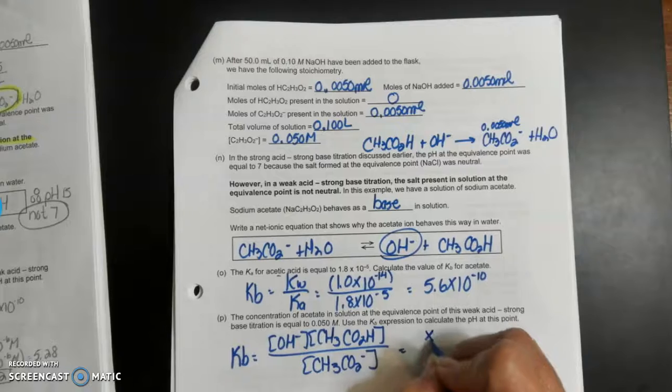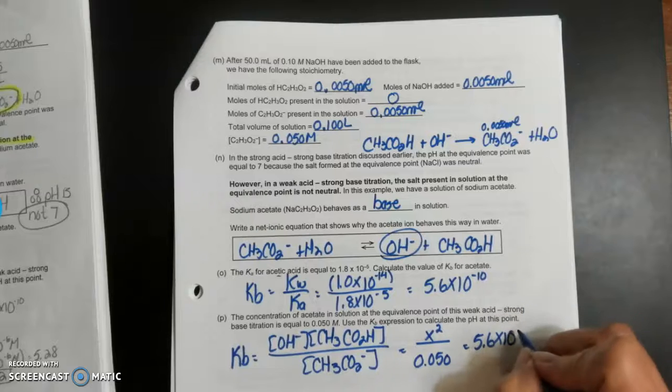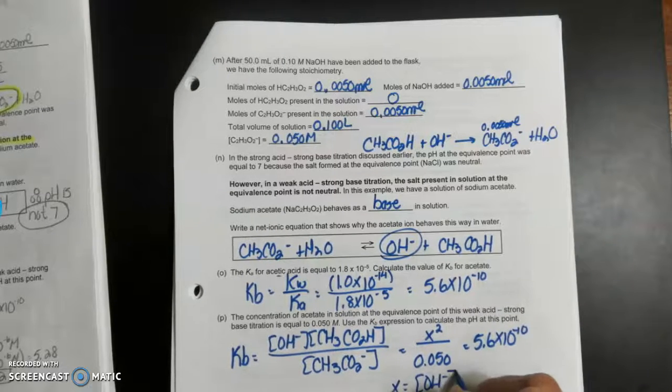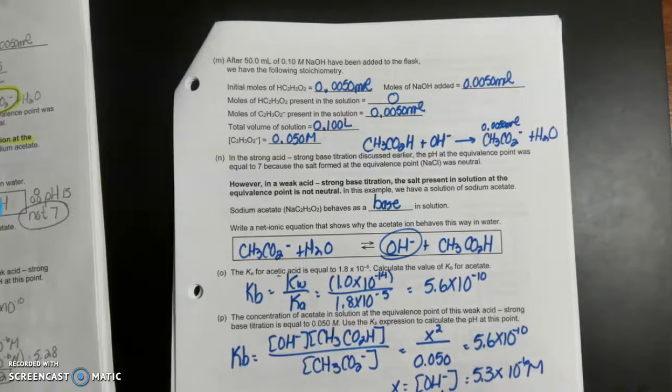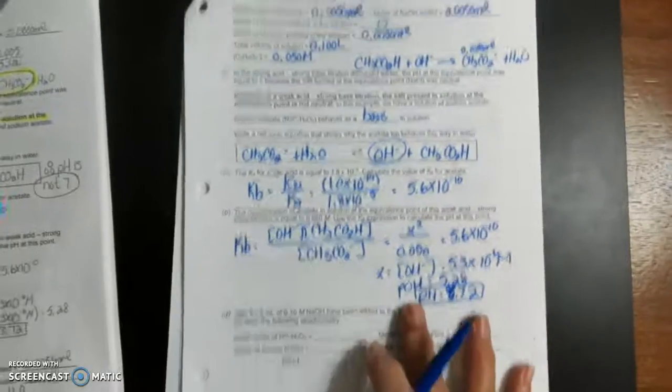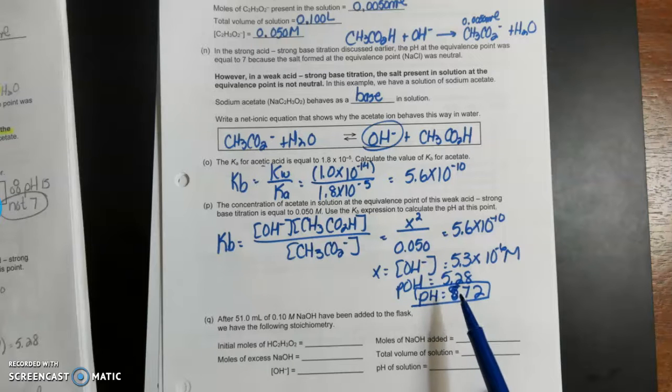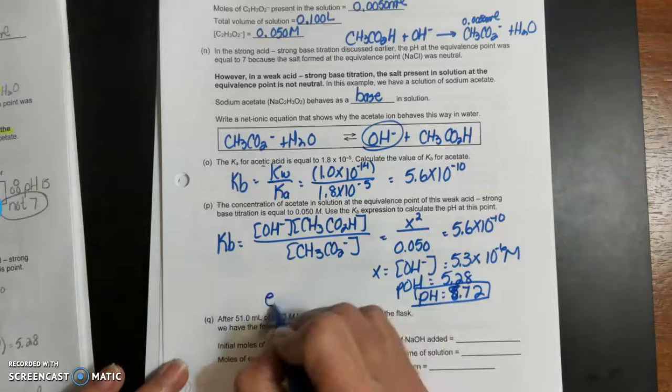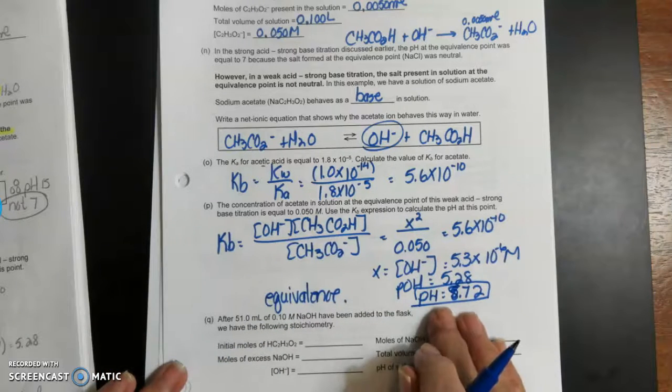This is now the acetate reaction, right, generating hydroxide, is equal to X squared over 0.050, which is 5.6 times 10 to the minus 10. Then X is equal to the OH concentration, which is 5.3 times 10 to the minus 6 molar. POH is equal to 5.28. pH is equal to 8.72. So notice that, just like we set up here, at the equivalence point for a weak acid strong base titration, the equivalence point is not at 7. The equivalence point is not at 7, and my pH is a little higher. So I'm going to stop here, and we're going to continue this problem in the next video.